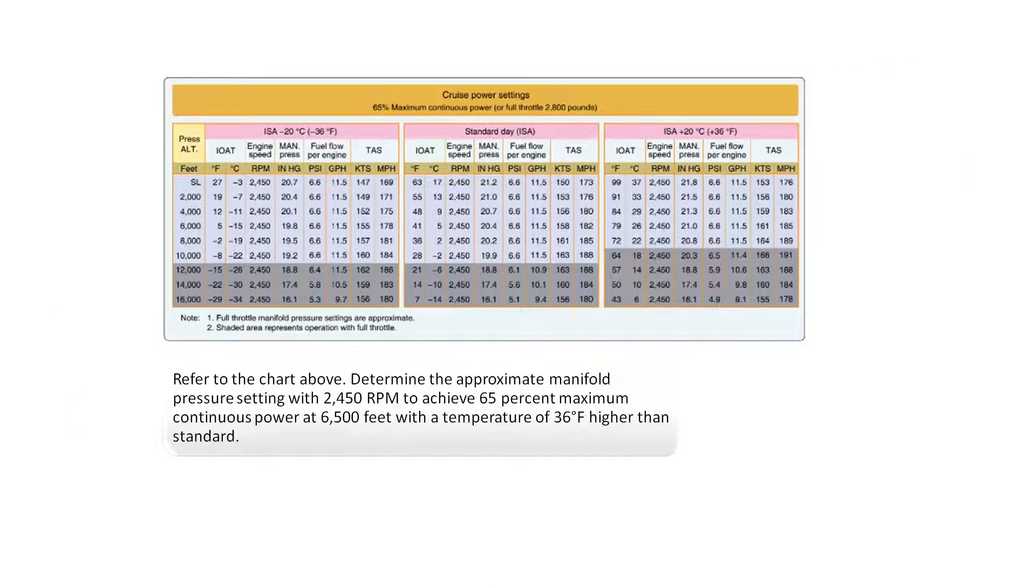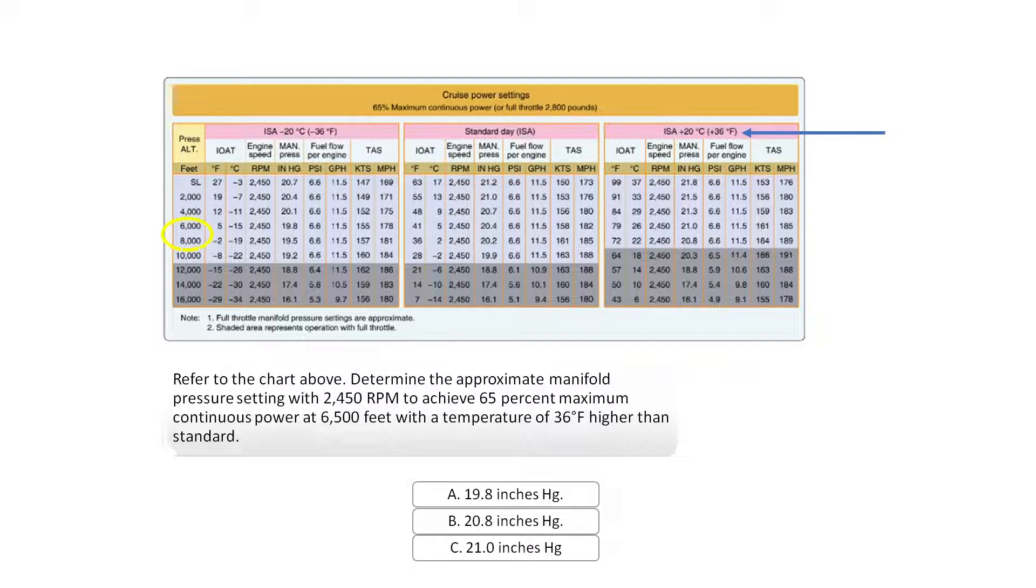Refer to the chart above. Determine the approximate manifold pressure setting with 2,450 RPM to achieve 65% maximum continuous power at 6,500 feet, with a temperature of 36 degrees Fahrenheit higher than standard. See the right side of the chart with the cruise power settings adjusted for the increased air temperature. Move down to the row that corresponds with the pressure altitude on the left. Since the indicated pressure altitude is 6,500 feet, look at the right side of the chart to the corresponding power settings when the altitude is between 6,000 and 8,000 feet.